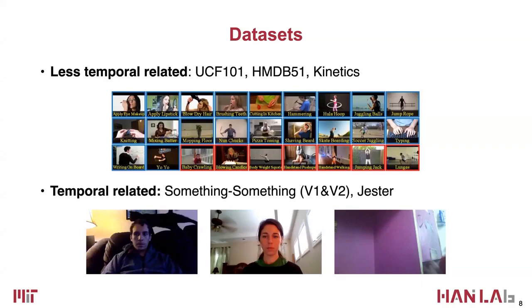Before continuing, let's introduce some widely-used video datasets. We can divide them into two kinds. The first kind is less temporally-related datasets, including UCF-101, HMDB-51, and Kinetics. These datasets perform video recognition, but their labels are not very temporal-related — for example, applying eye makeup or doing sports. For these classes, you can often tell what the person is doing from a single frame.